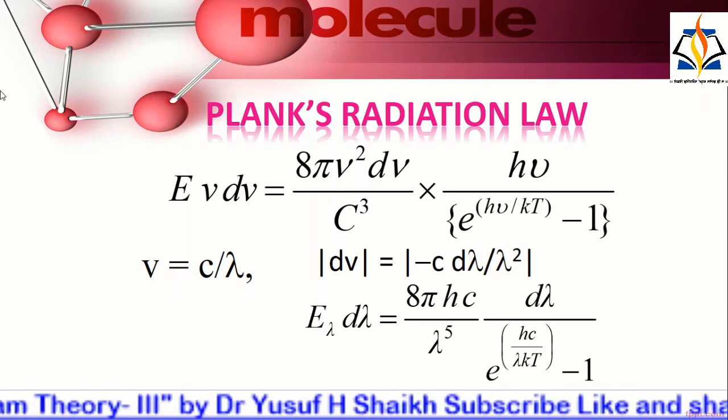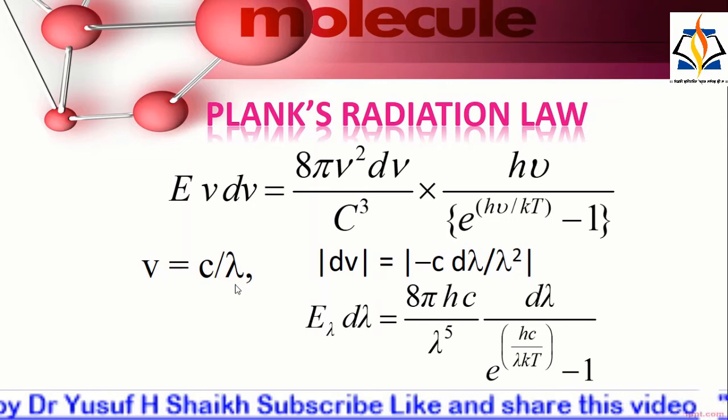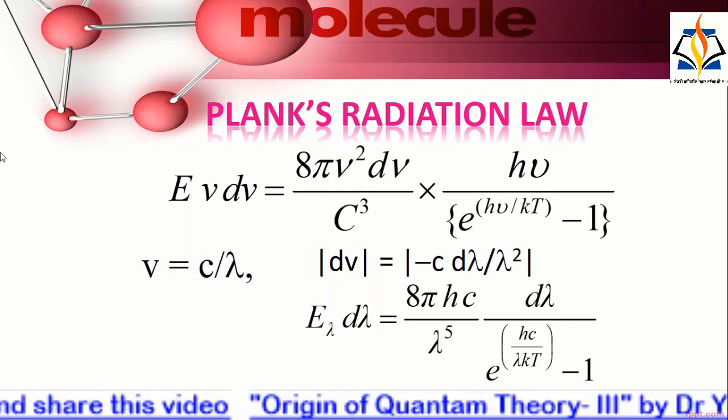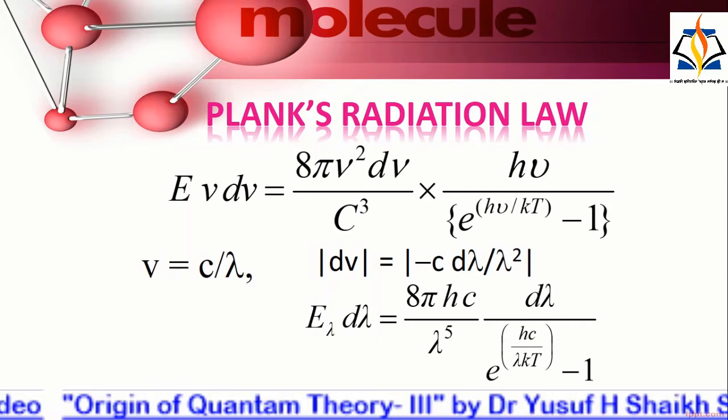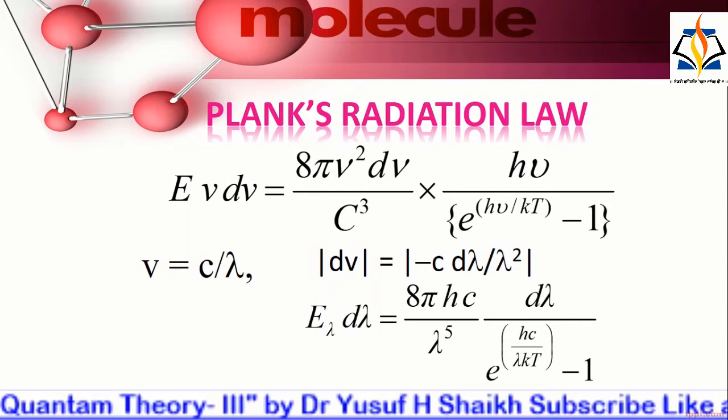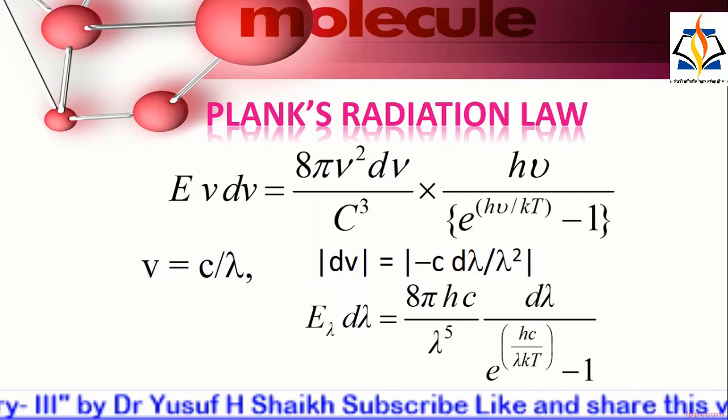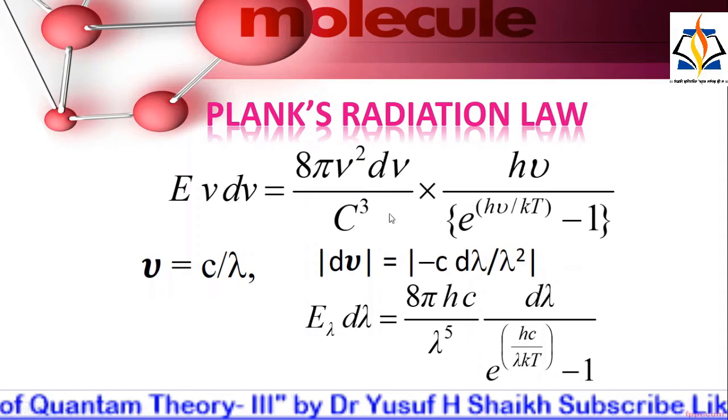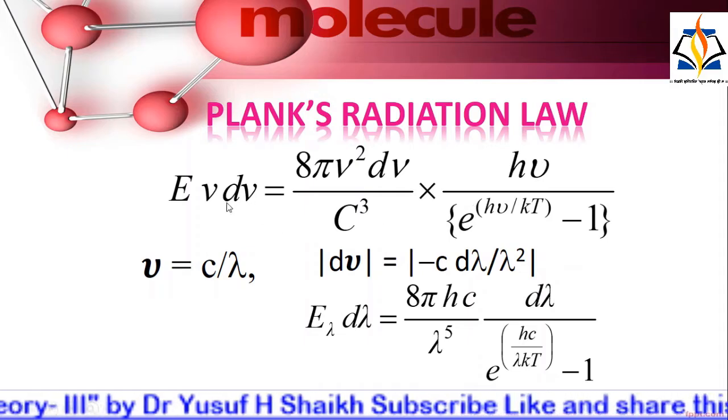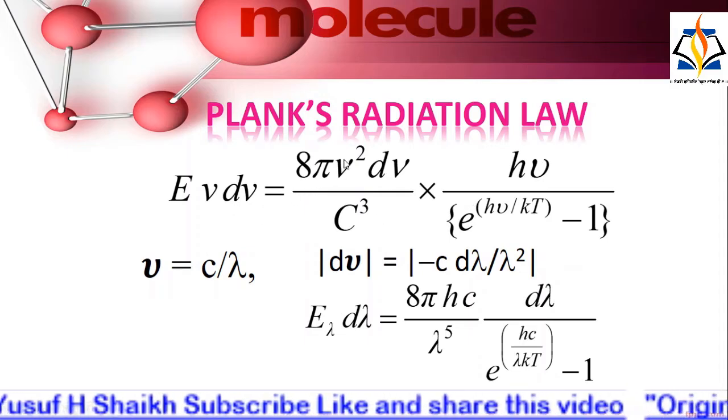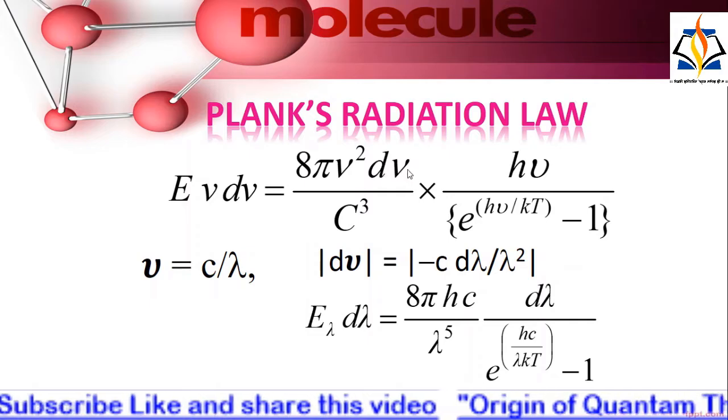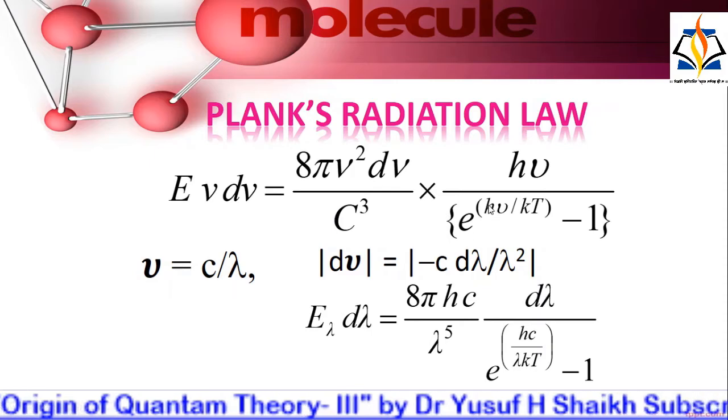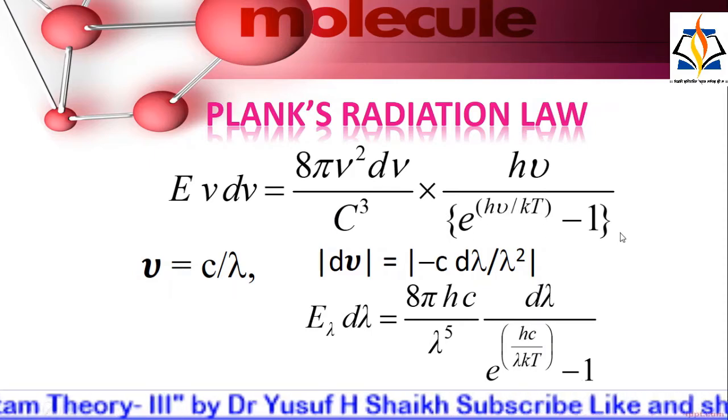Planck's radiation law: E nu d nu equals 8 pi nu squared d nu upon c cubed multiplied by h nu divided by e raised to h nu upon kT minus 1.